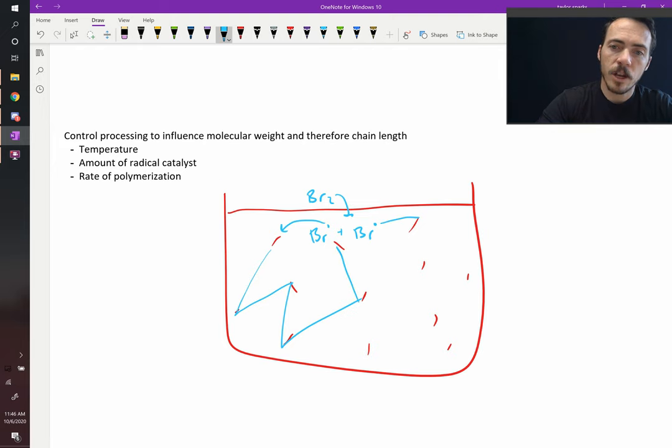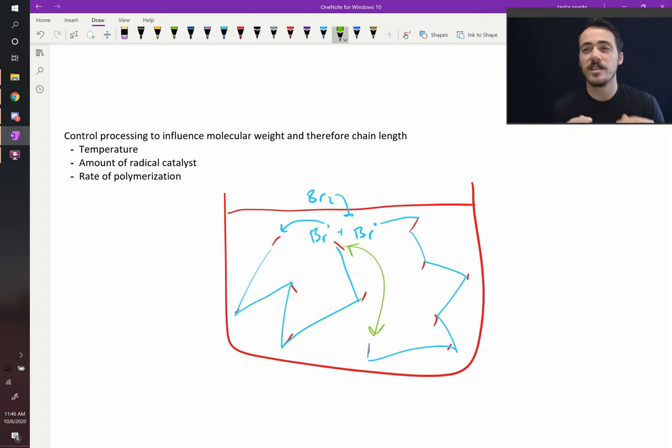Meanwhile, this one could go to that chain, link it to that, this, that, that, and that. And all of a sudden, the only thing left that can happen is these two chains can find one another. And you could imagine a scenario where you just get one chain. Now, that doesn't happen. In the real world, you get many chains. But that's the idea.